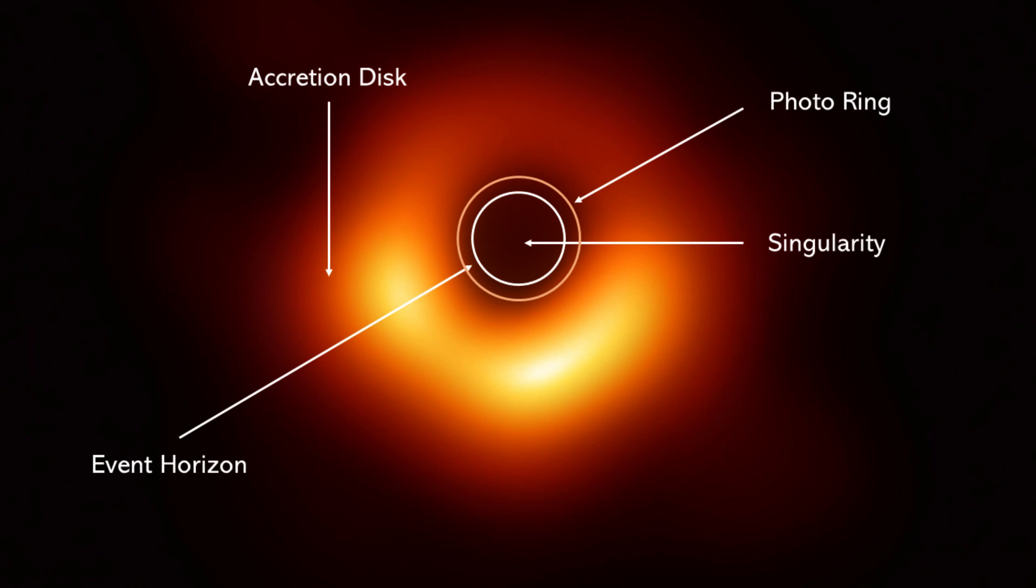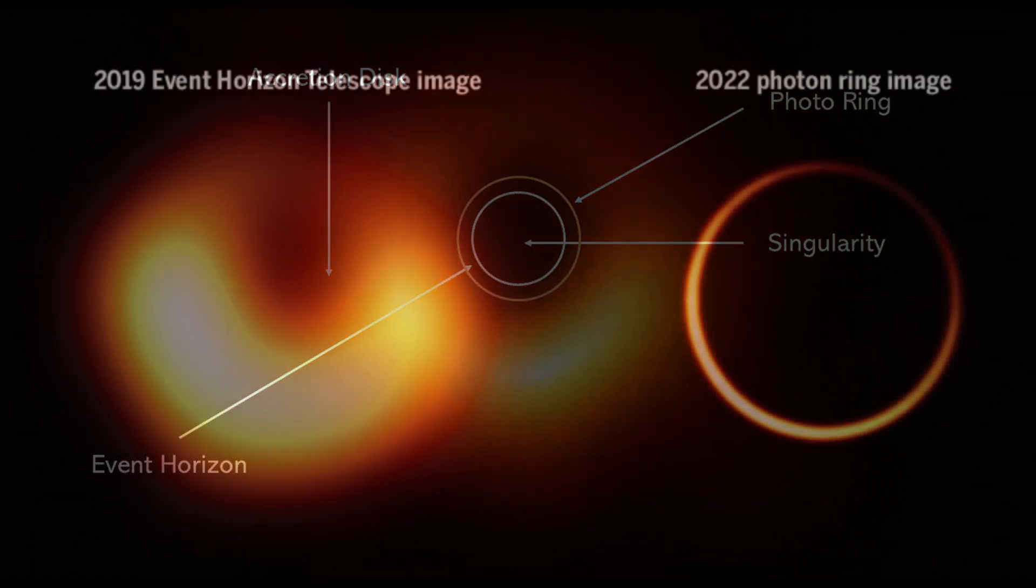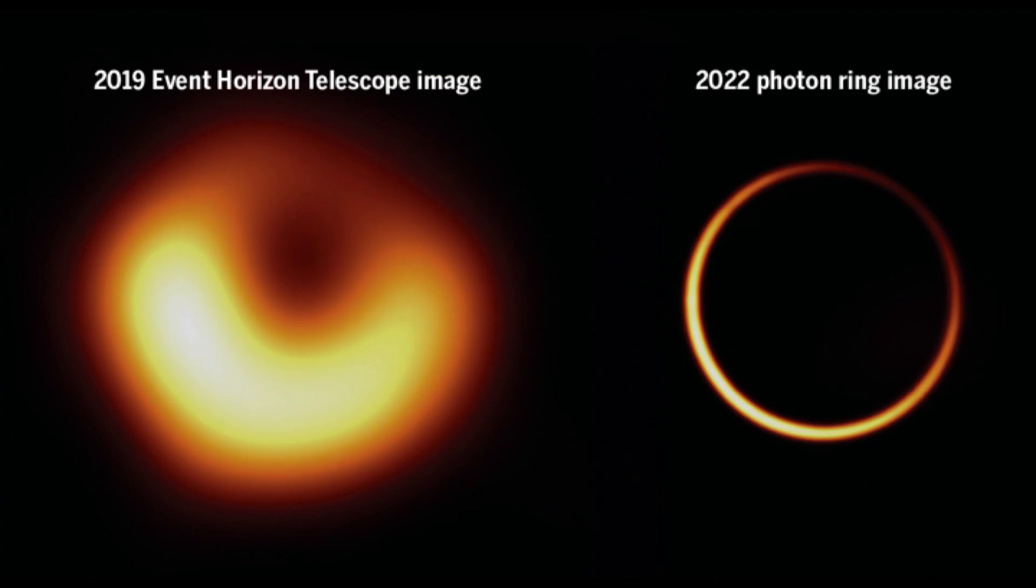In the vicinity of a black hole, space-time is severely curved, and light follows these curved paths. When the black hole rotates, it creates a region where photons can travel in closed orbits. The photon ring is situated just outside the event horizon of the black hole, very close to the innermost stable circular orbit.